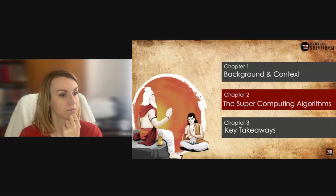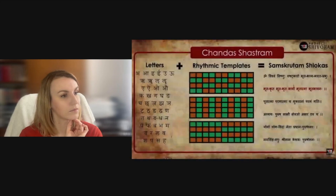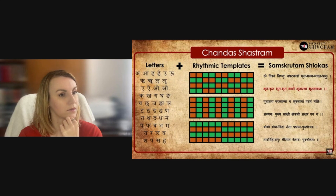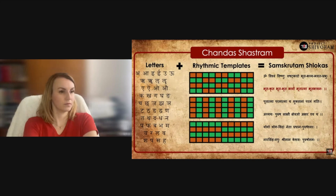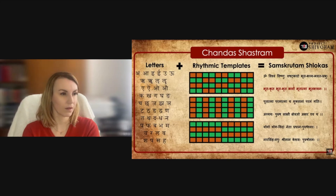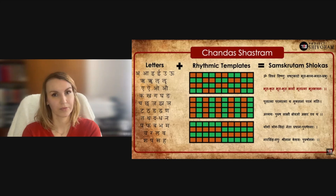Now let's move to Chapter 2: the algorithms on supercomputing. Some mind-blowing aspects of Chandash Sastram — as I said, it's all about creating word combinations that fit in predefined rhythmic templates. As part of this process you have to construct different kinds of words that fit into these templates, and here is where you deal with heavy calculations on the number of permutations and combinations possible with letters to create specific words that fit into the rhythmic templates.